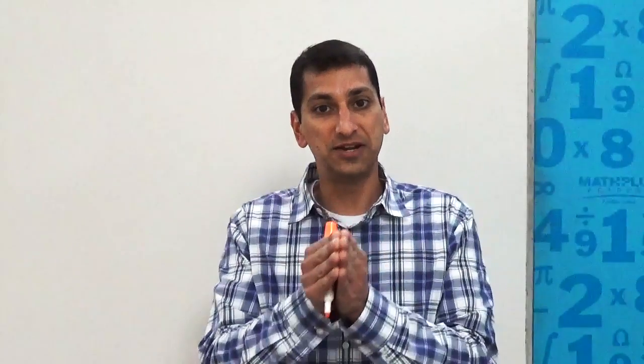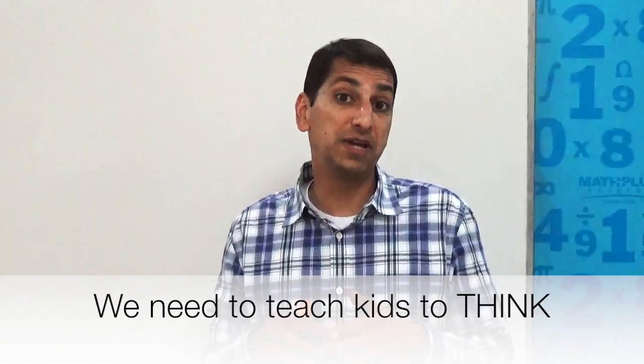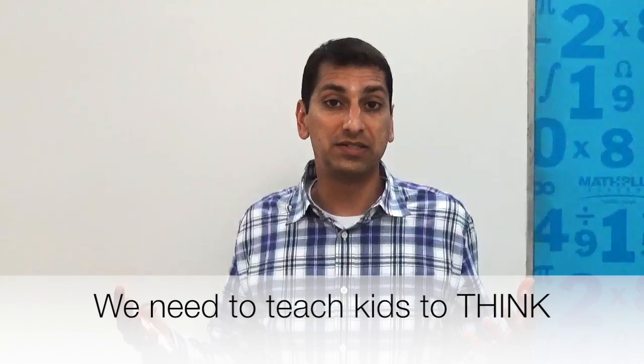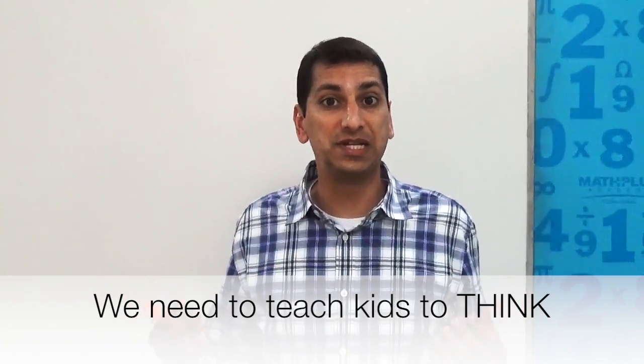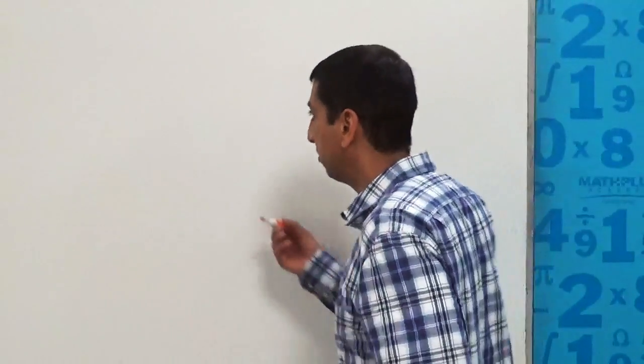So what we need to be doing, and this is part of the shift that is being made in education now, is starting to teach kids to think and understand and sometimes use different strategies to solve problems because the standard algorithms, while they always do work, are not always the most efficient. And I can give you several examples of that. So let me start with a multiplication example, two-digit multiplication.